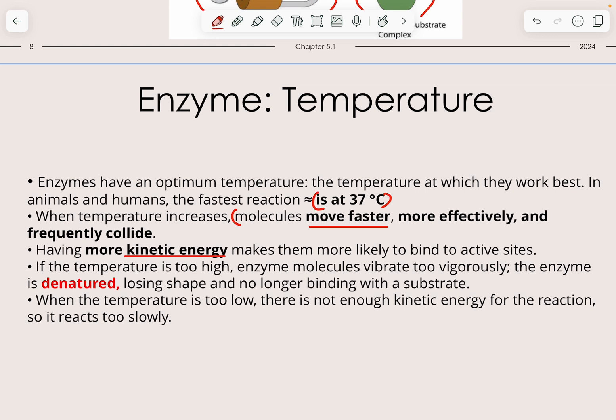If temperature is too high, the enzyme molecule will vibrate too vigorously and the enzyme will start to denature. Denature means almost like dying or more like non-functional. But for this case as an enzyme, you cannot put dying because the enzyme itself is not a living organism. It's just a small substance that helps to increase the rate of reaction. Every time you put the word denature, it is enough, and it will lose its shape and no longer bind with the substrate. When temperature is too low, there is not enough kinetic energy for the reaction. Therefore, it will be very slow.